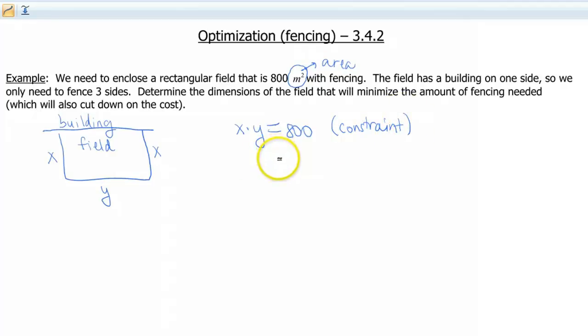What else do we know or what else do we need to find? Well, as you read the problem here, we need to minimize the amount of fencing. So fencing, that would be like going around the outside of the field. So that idea from geometry is perimeter.